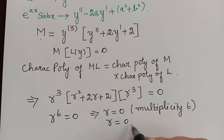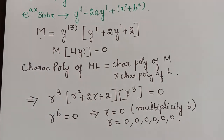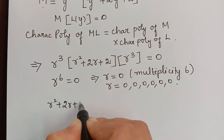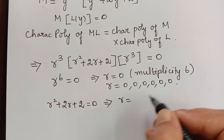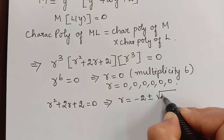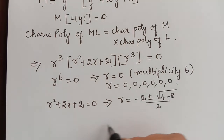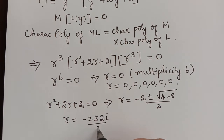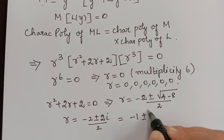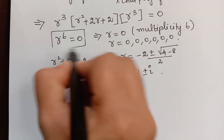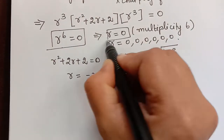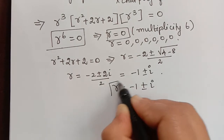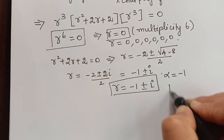From R⁶ = 0, we get R = 0 of multiplicity 6. For R² + 2R + 2 = 0, using the quadratic formula: R = (-2 ± √(4-8))/2 = (-2 ± √(-4))/2 = (-2 ± 2i)/2. Therefore R = -1 ± i, where alpha = -1 and beta = 1.